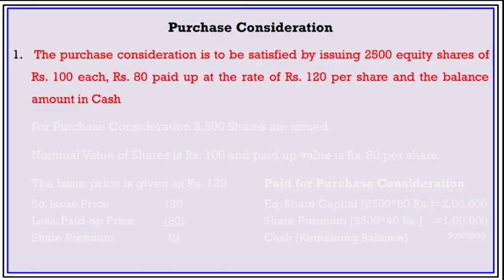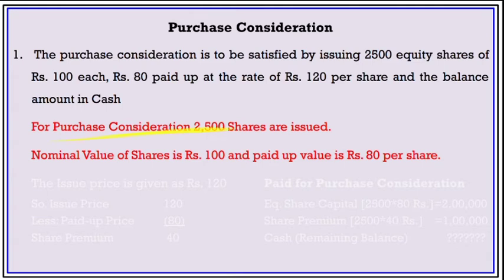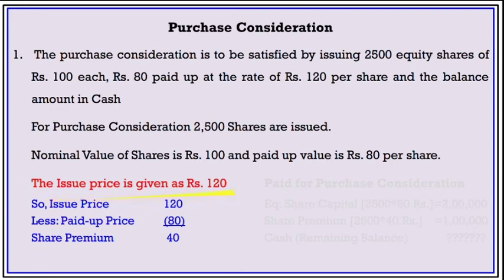The purchase consideration is to be satisfied by issuing 2500 equity shares, Rs. 80 paid up, at Rs. 120 per share, and the balance amount in cash. Equity share information: nominal value Rs. 100, paid up value Rs. 80, and issue price Rs. 120. So the premium is Rs. 120 minus Rs. 80, which equals Rs. 40. For purchase consideration: Equity share capital = 2500 × 80; Premium = 2500 × 40; and balance in cash.